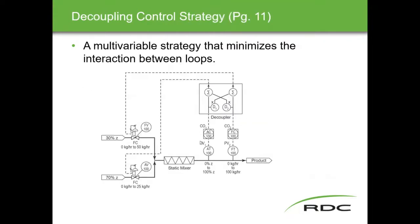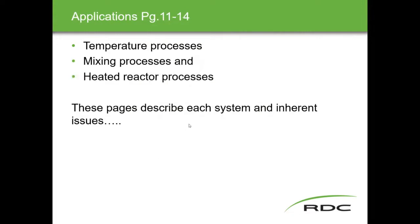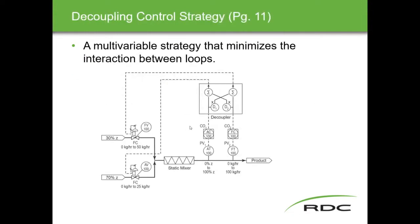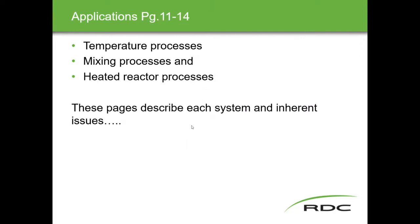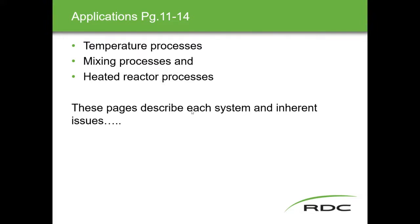That leads us into decoupling control strategy. We know what the interaction is between the two — one affects the other by a factor of three, and one affects it by one. There's math we can use to calculate values to put in here to minimize the effect of one change on the other loop. Common applications for decoupling include temperature processes, mixing processes, and reactor processes — pages 11 to 14.